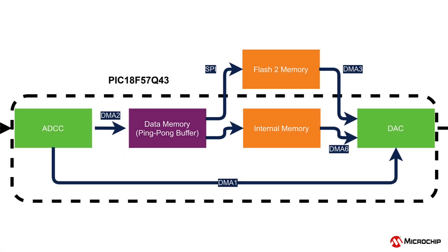The reason for the two paths is that while the microcontroller contains internal storage, it has limited memory. The Flash2Click allows us to store much more data and contains 8 megabytes of data memory.